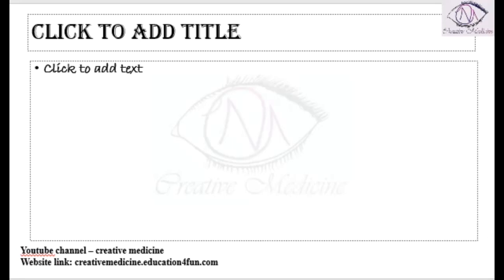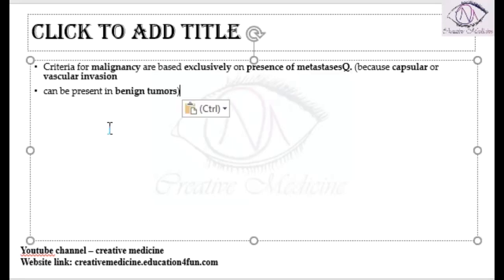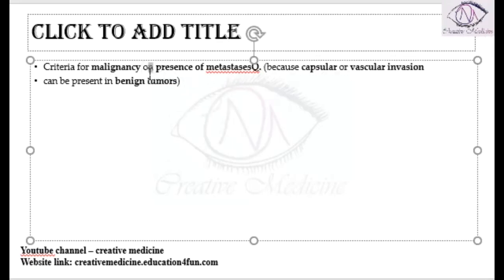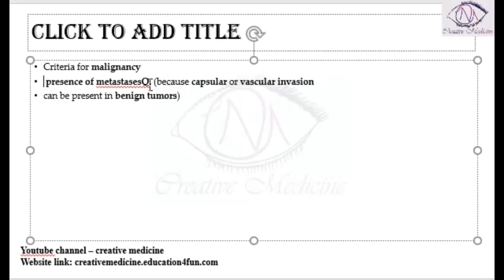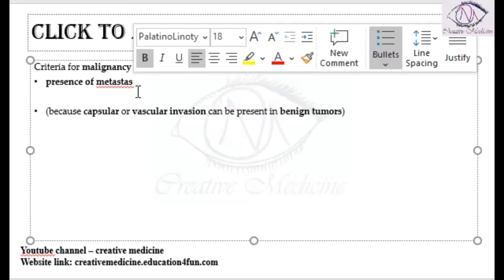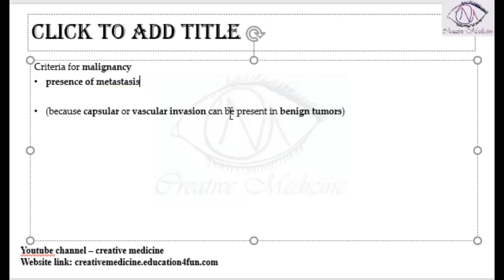The criteria of malignancy of pheochromocytoma is mainly based on the presence of metastasis, because even benign pheochromocytomas have vascular and capsular invasion. Vascular and capsular invasion may be present in benign tumors also, so the main criteria of malignancy is the presence of metastasis.